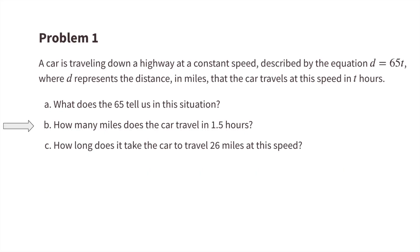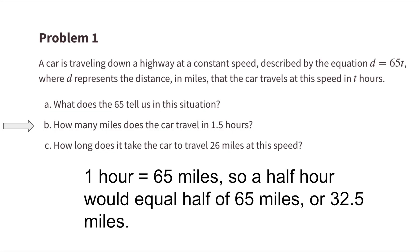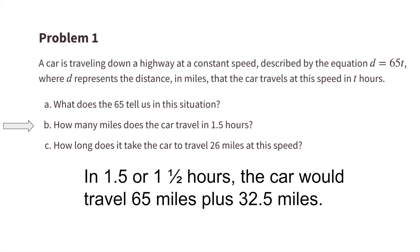Part b: how many miles does the car travel in one and five-tenths hours, or one and a half hours? In one hour the car travels 65 miles, so a half hour would be half of 65 miles, which is 32.5 miles. In one and a half hours the car would travel 65 miles plus 32.5 miles, which equals 97.5 miles.